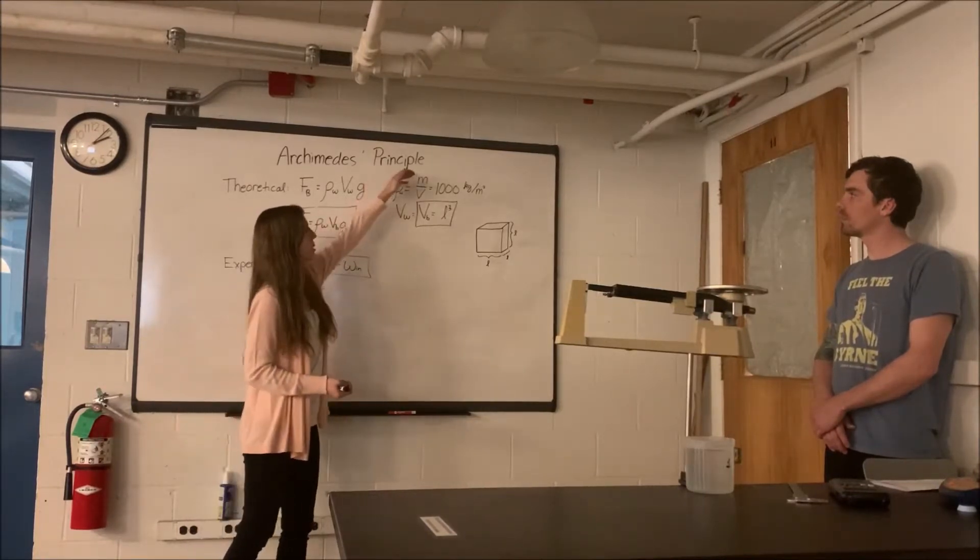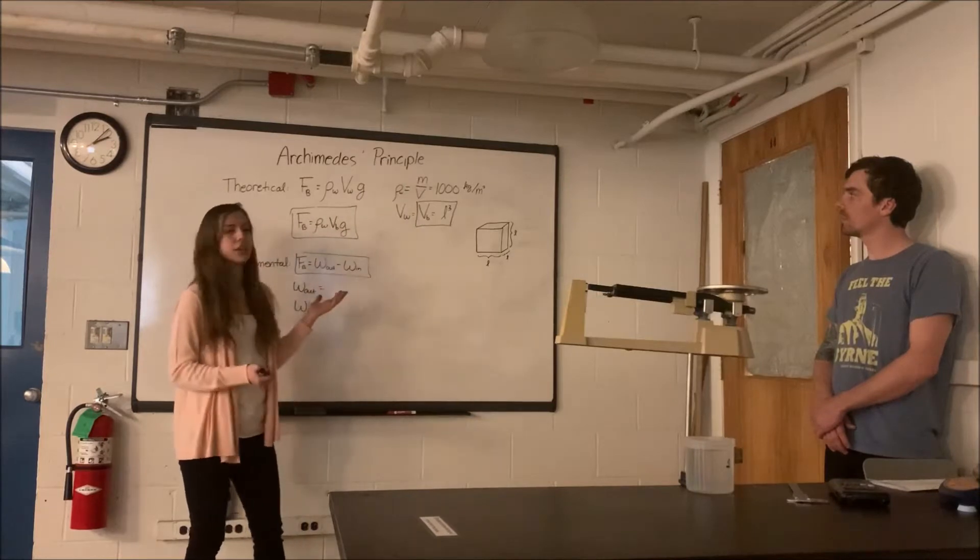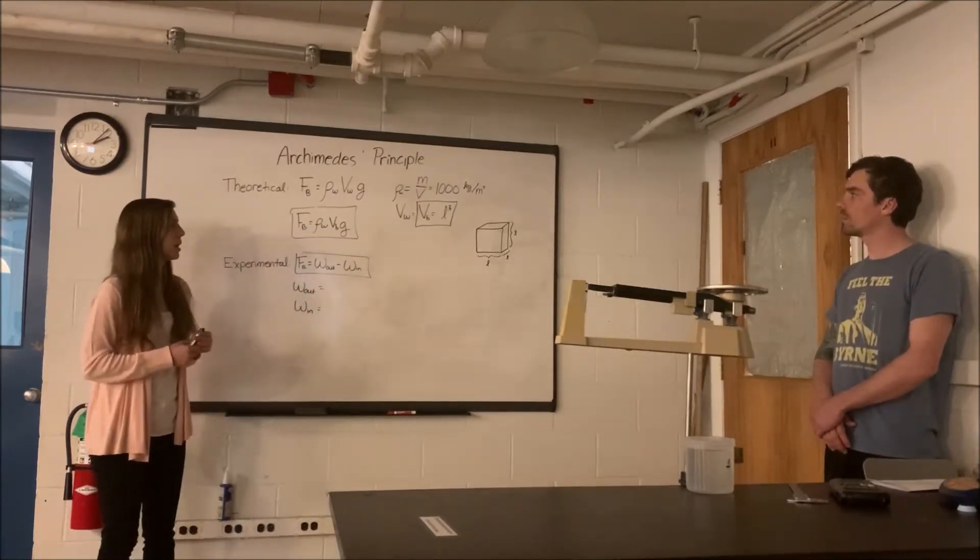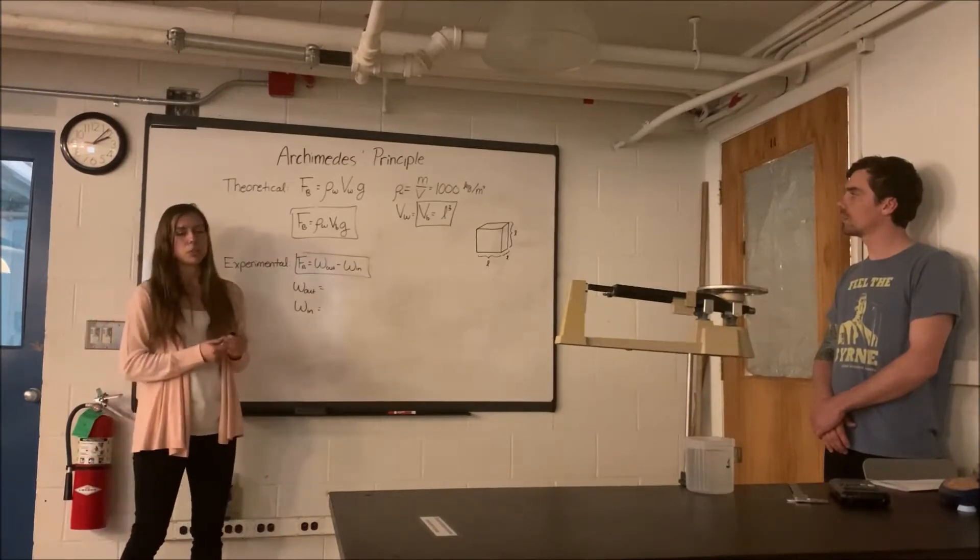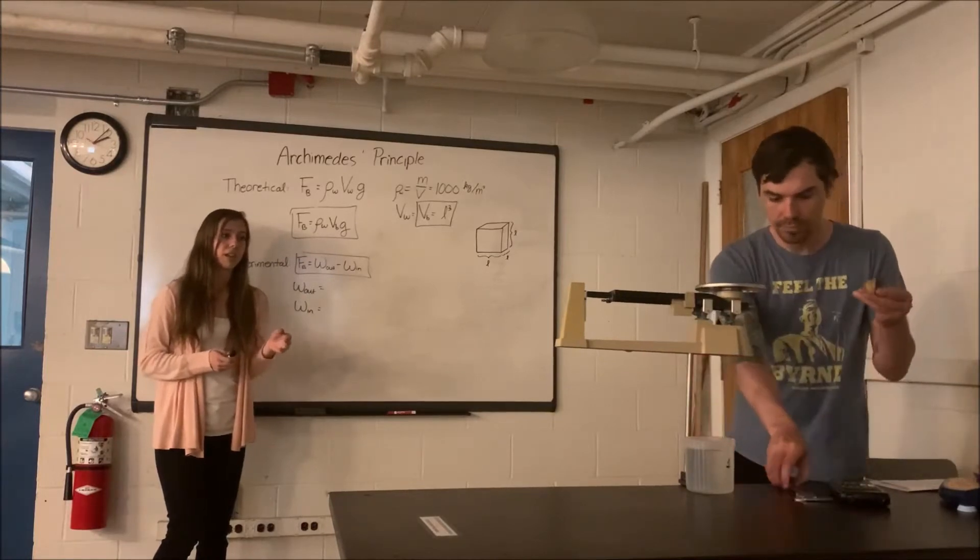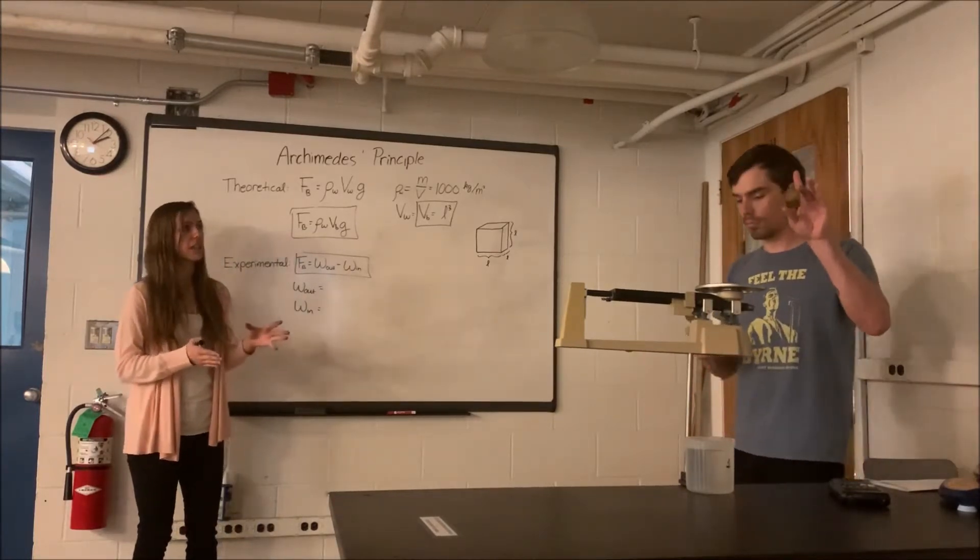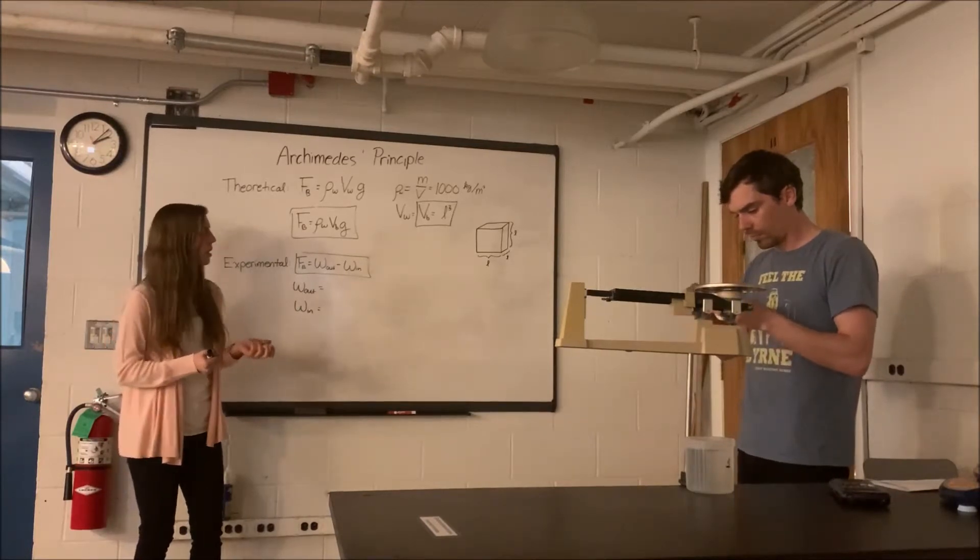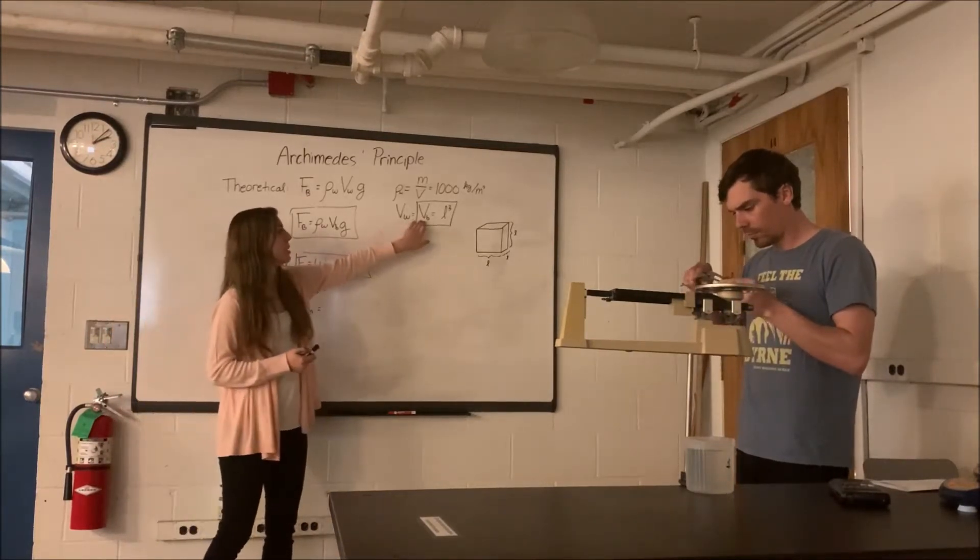So because of this, ρ equals m over v, you can rearrange those terms and get mass. So mass is ρv, and the volume of the water displaced in this case is going to be equal to the volume of our block. It's true in this case only because we're going to completely submerge the block into water. So v_w equals v_b.